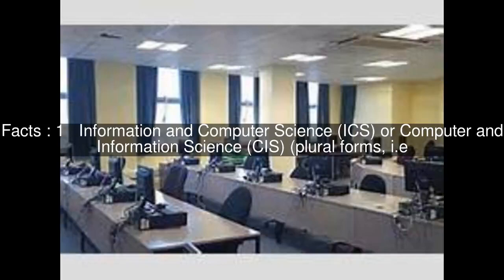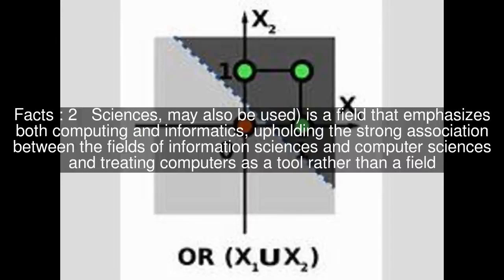Information and Computer Science or Computer and Information Science (Sciences may also be used) is a field that emphasizes both computing and informatics, upholding the strong association between the fields of information sciences and computer sciences and treating computers as a tool rather than a field.